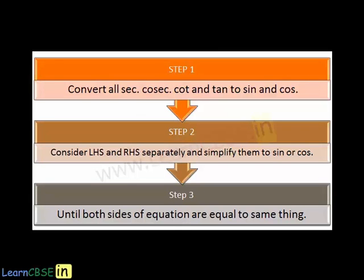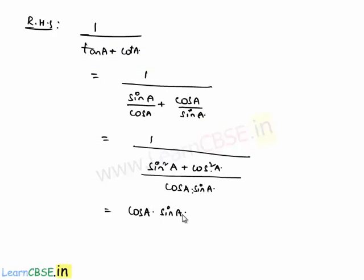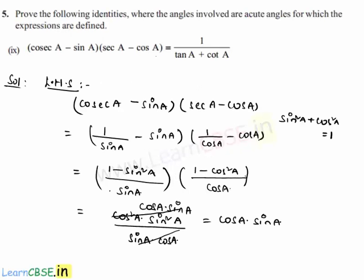The simplified form of the right hand side is cos a into sin a, which is equal to the simplified form of the left hand side. So the given equation is true.